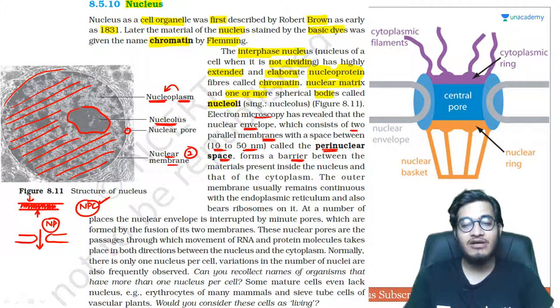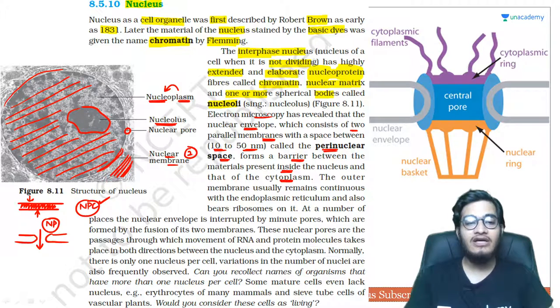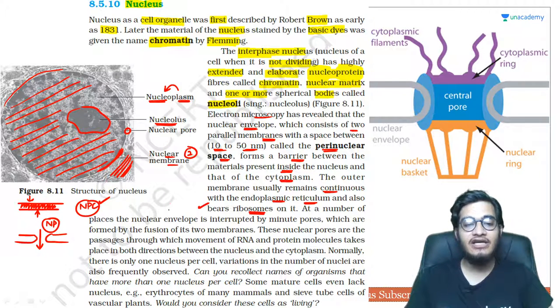And it forms the barrier between materials present inside the nucleus and cytoplasm. Since cytoplasm is present just outside the nucleus, there must be a barrier, a gap between them. The outer membrane is continuous with the endoplasmic reticulum. We've seen that lamellae come out from the outer membrane and ribosomes are also present on it, so you can say it's rough endoplasmic reticulum which helps in protein synthesis.